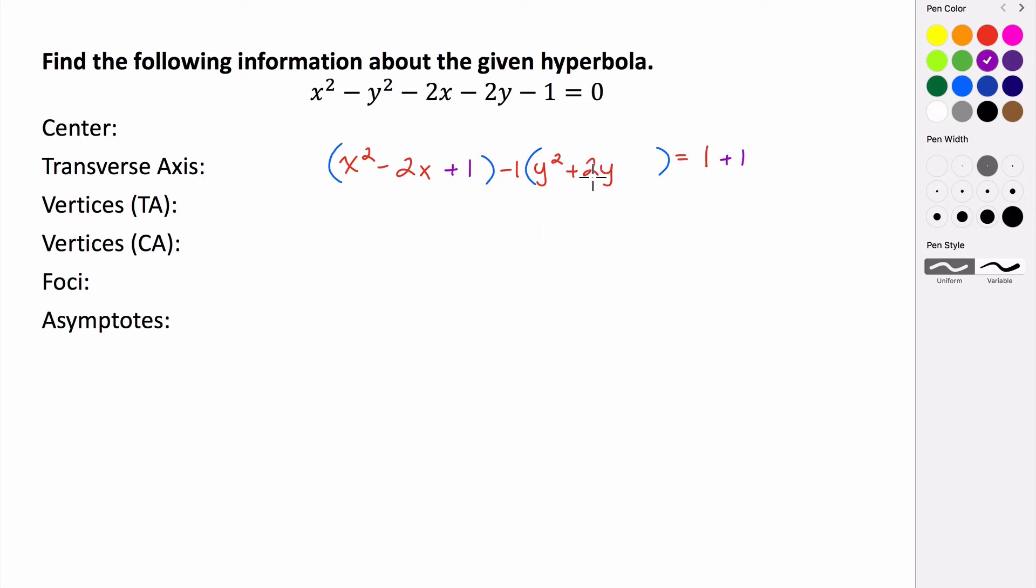In this case, we take 2 divided by 2, which is positive 1, and we square that, and we get 1, and we add that to both sides. Now we're not actually adding a positive 1 here, because if you can see, this positive 1 is being multiplied by a negative. So if we were to apply the distributive property, this would actually be 1 times the negative 1 that is the coefficient.